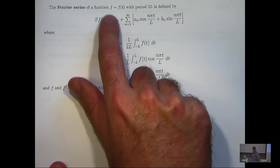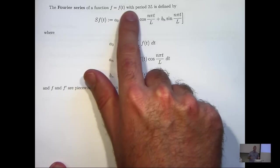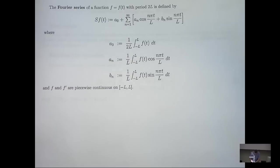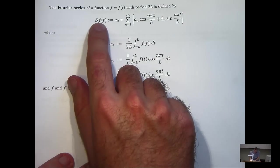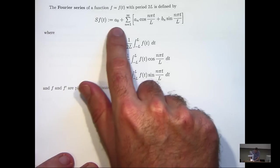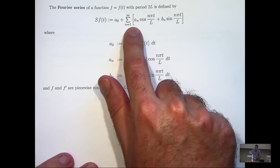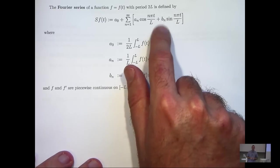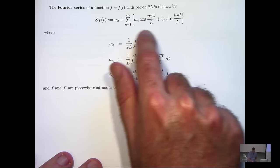Well, if we have a function little f of t that has period 2L, then we define and denote the Fourier series of little f as this Sf of t. Basically the Fourier series is just a series that involves cosines and sines. Now you'll see these coefficients here: a0, an, and bn.